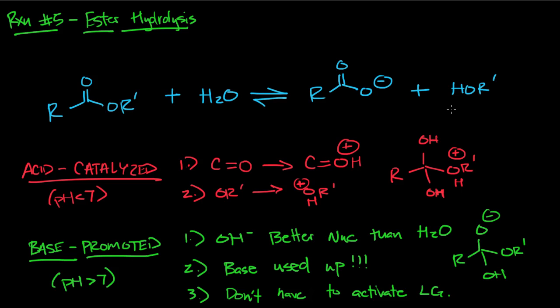The first one is acid-catalyzed. This is what's going to happen when your pH is less than seven. Just like with other reactions, you can activate the carbonyl by making it more electrophilic, protonating it, and then you can also make the